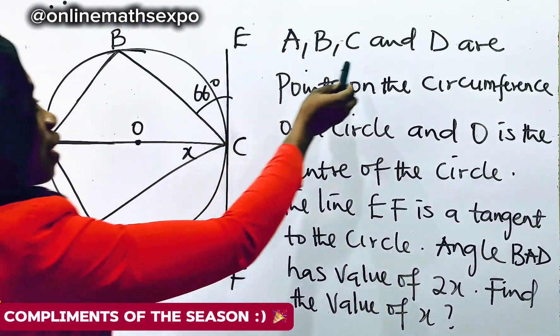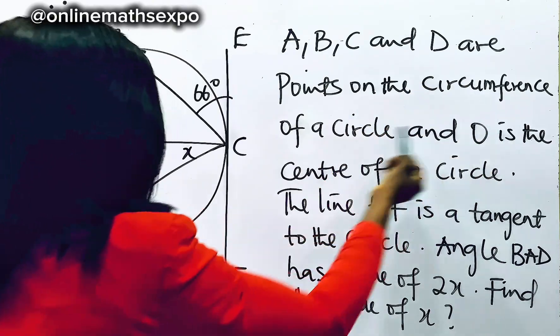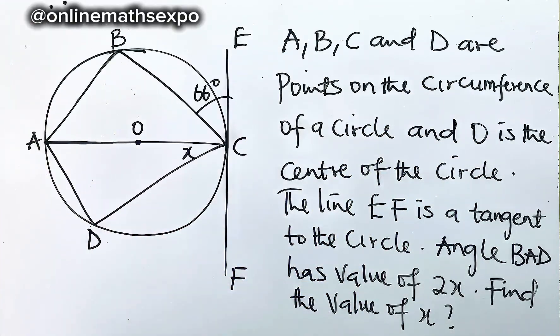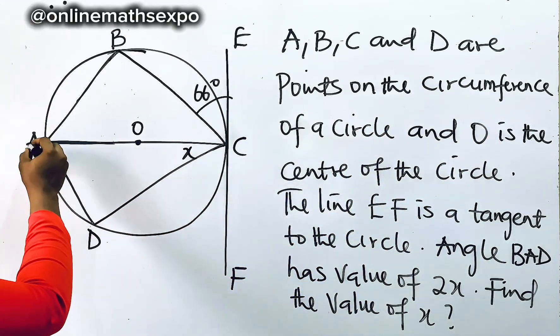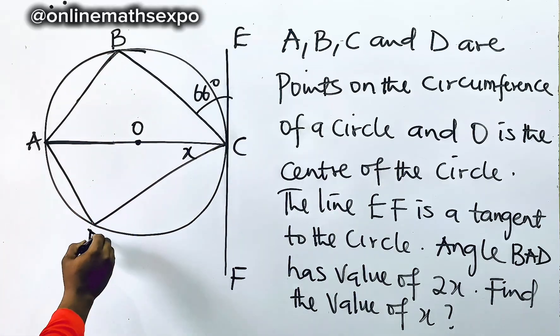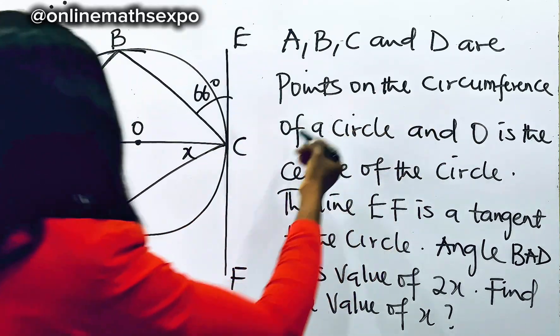We are told A, B, C and D are points on the circumference of the circle. Now go to the diagram: A, B, C, D are points on the circumference.